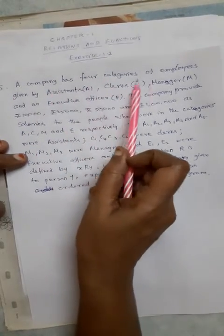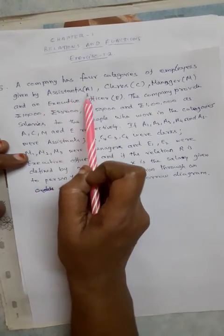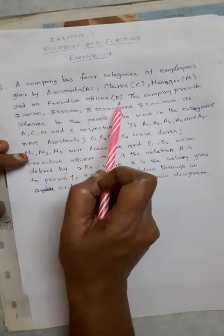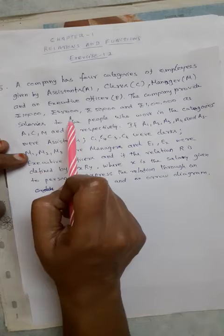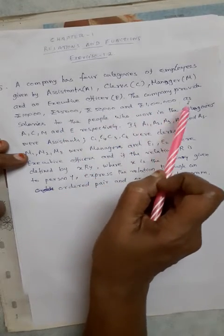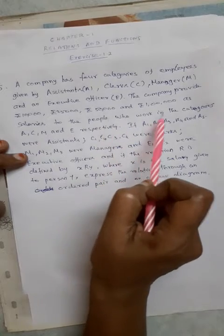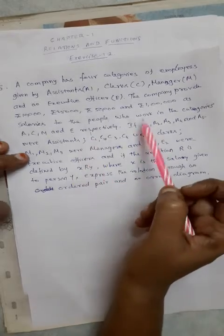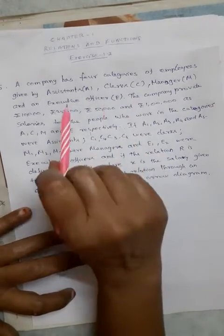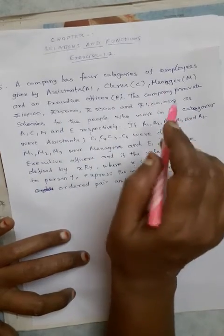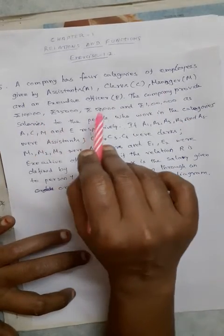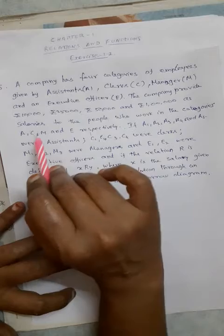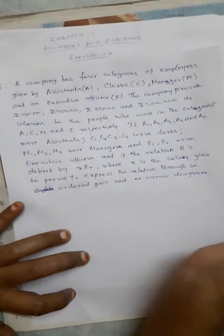A company has four categories of employees given by Assistant A, Clerk C, Manager M, and Executive Officer E. The company provides 10,000, 25,000, 50,000, and 1 lakh as salaries to the people who work in categories A, C, M, and E respectively. The assistants get 10,000, clerks get 25,000, managers get 50,000, and executive officers get 1 lakh.